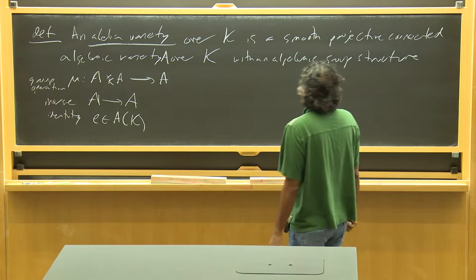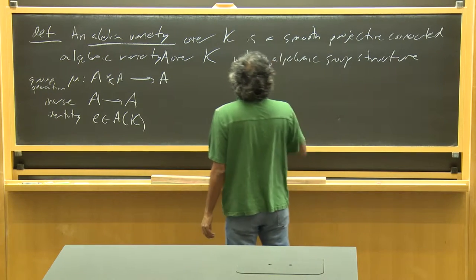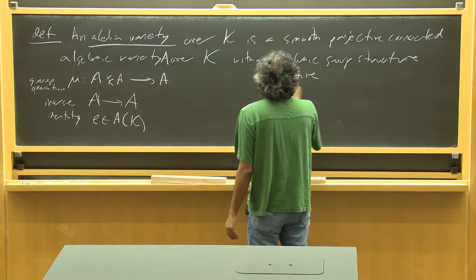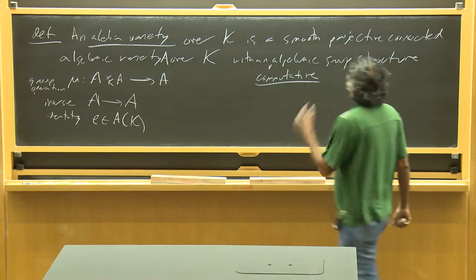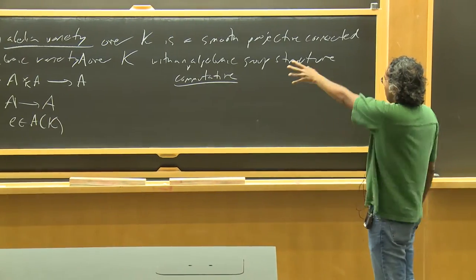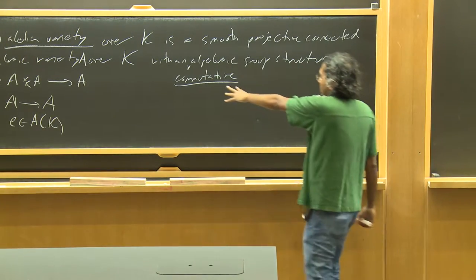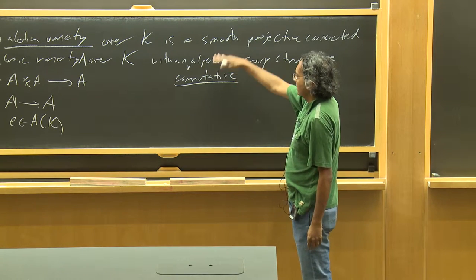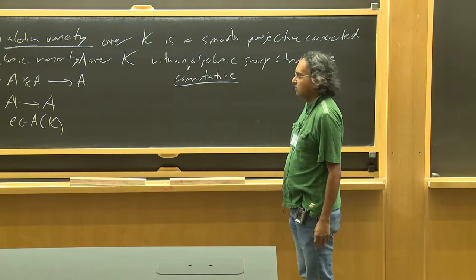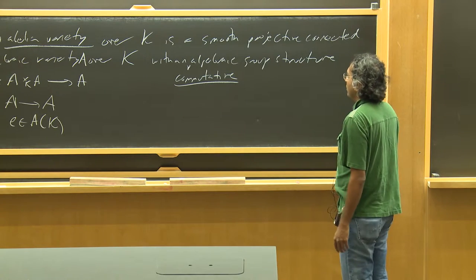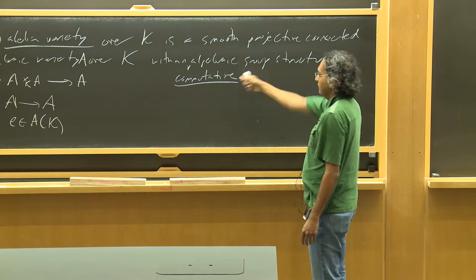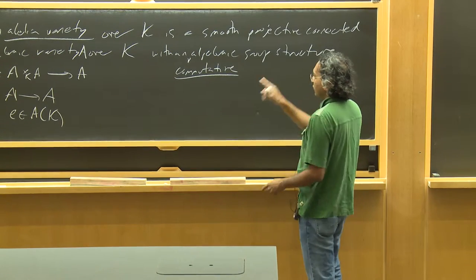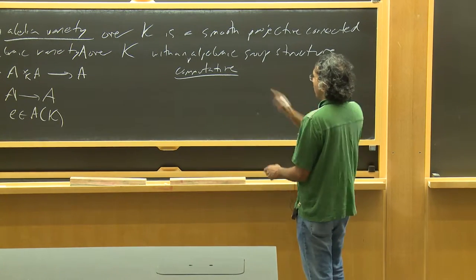It turns out — this is not immediately obvious — but when you impose these conditions, you automatically get something commutative. So you can either include that in the definition, or cite a theorem saying that, in the most principled kind of abelian varieties, this thing is automatically commutative.